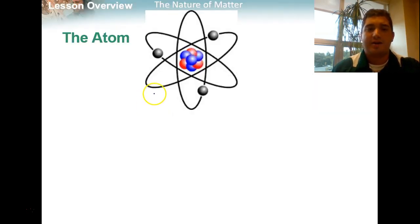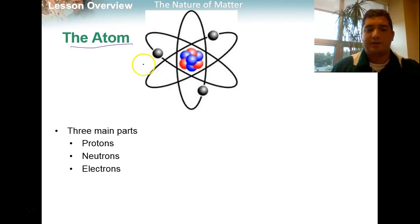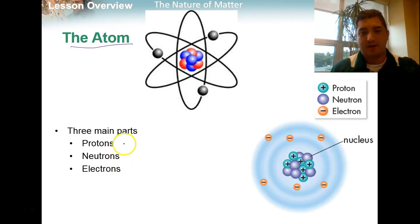When we start talking about chemistry in chapter two here and the nature of matter, it all revolves around the atom. Now the atom is our basic molecule. It gives us molecular structure, and there's three main parts. There's protons, neutrons, and electrons.